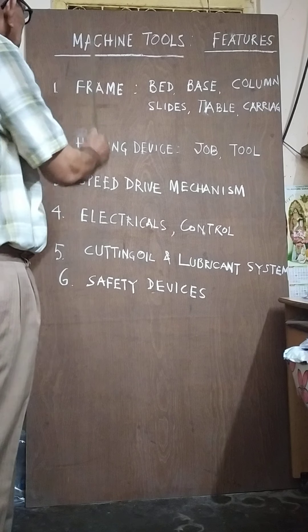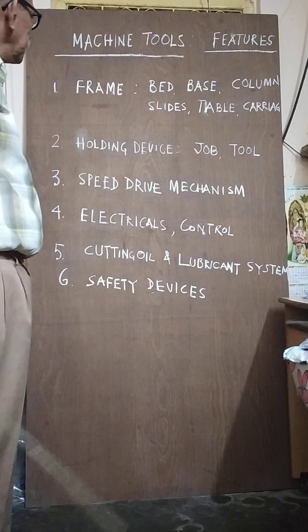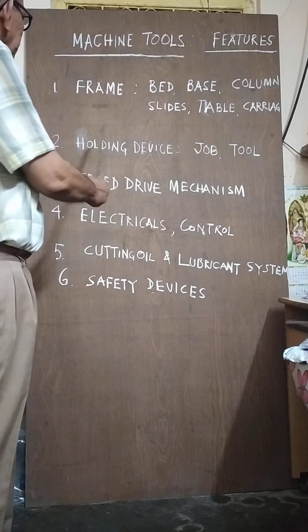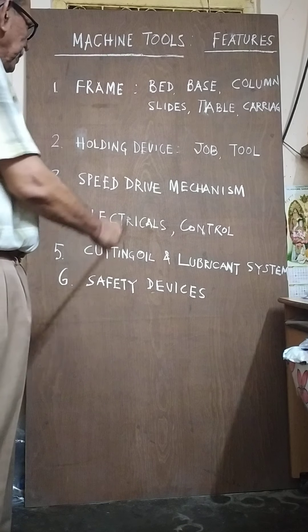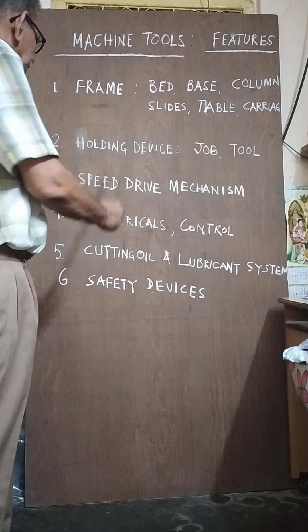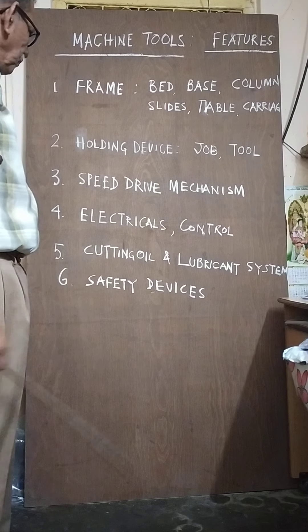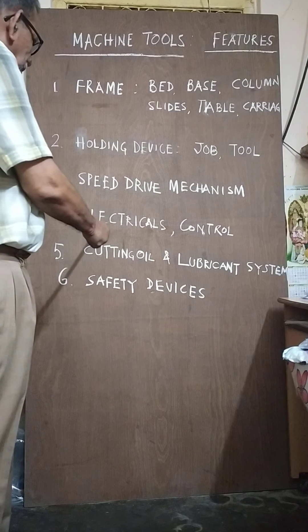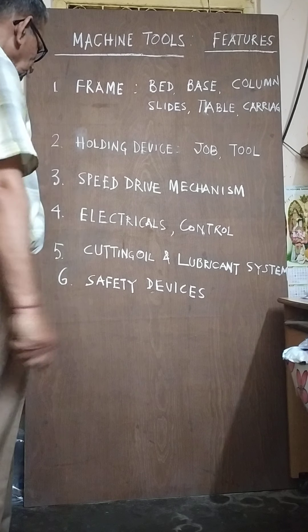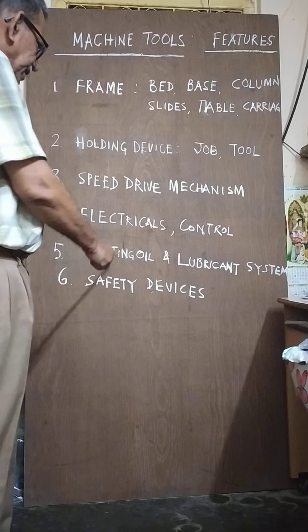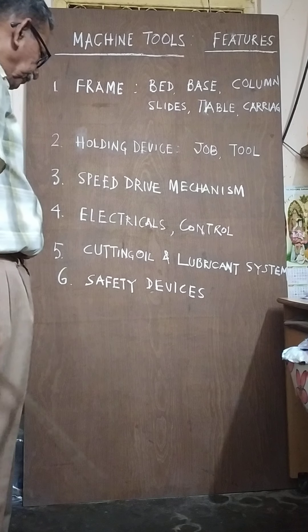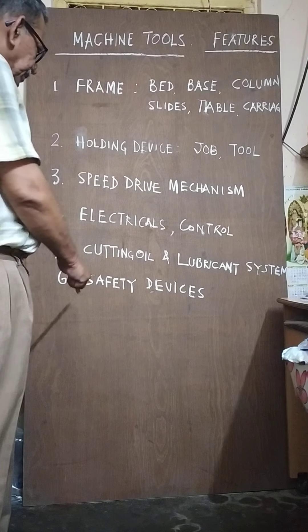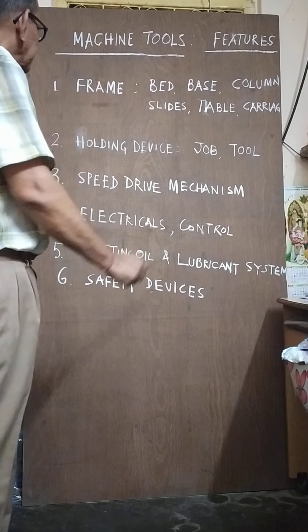A machine tool should have the following features: first is the frame; second is the holding device; third is the speed drive mechanism; fourth is the electrical control; fifth is the cutting tool and lubricating system; and sixth is the safety devices.